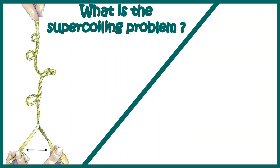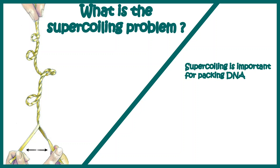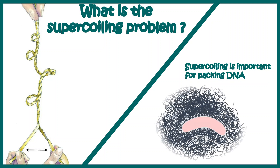Imagine the situation for an E. coli cell. In one experiment, the cell of E. coli was burst open and a huge amount of DNA was pulled all around. Imagine how E. coli can package this much DNA into such a small volume — and this is all possible due to the supercoiling effect.